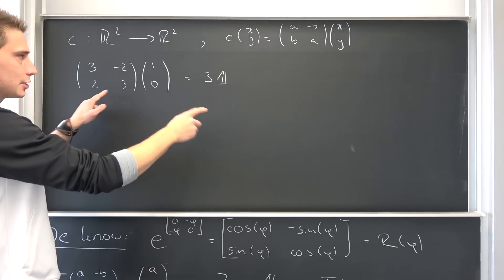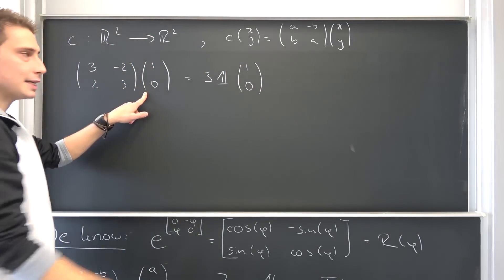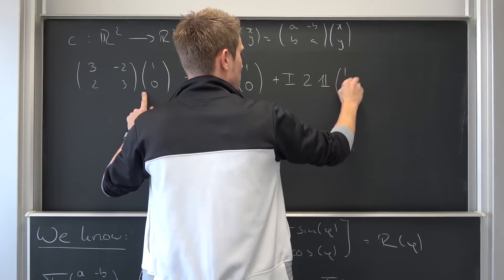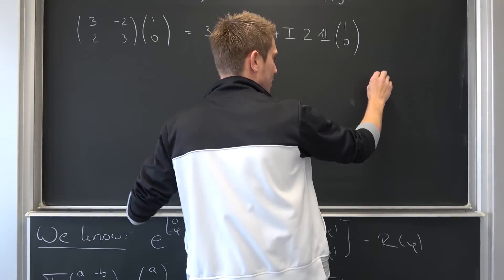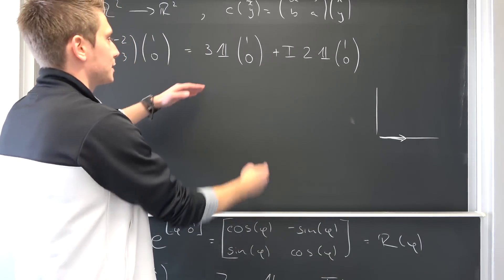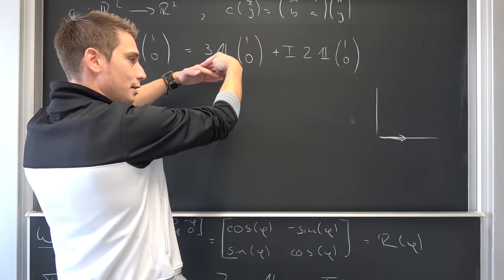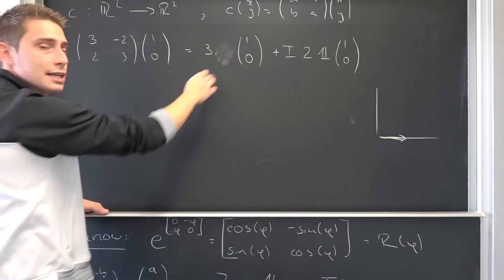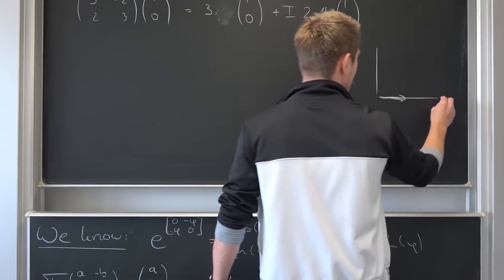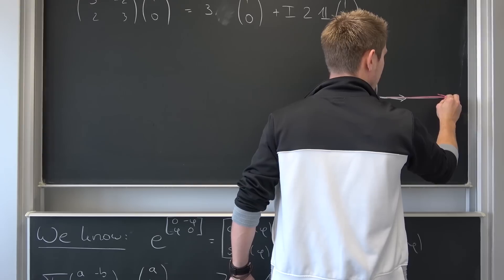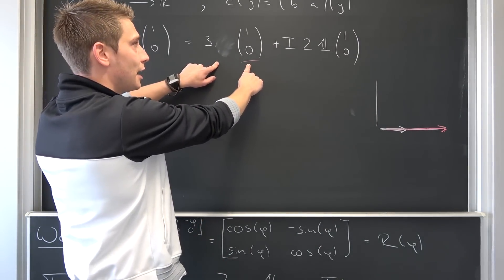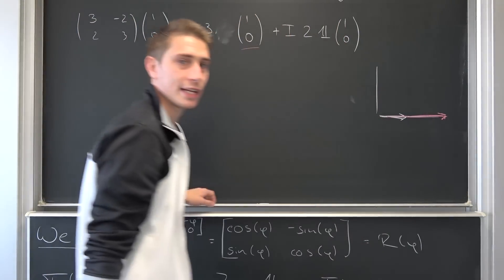This is nothing other than 3 times the identity matrix times (1, 0) — using the distributive law — plus our imaginary part: 2 times the rotation-by-90° matrix times (1, 0). First, we have our vector (1, 0). The identity matrix times (1, 0) gives (1, 0), and multiplying by 3 gives us (3, 0). So what we did to our vector after multiplying by the real part is basically stretching our vector by 3 units along the same axis.